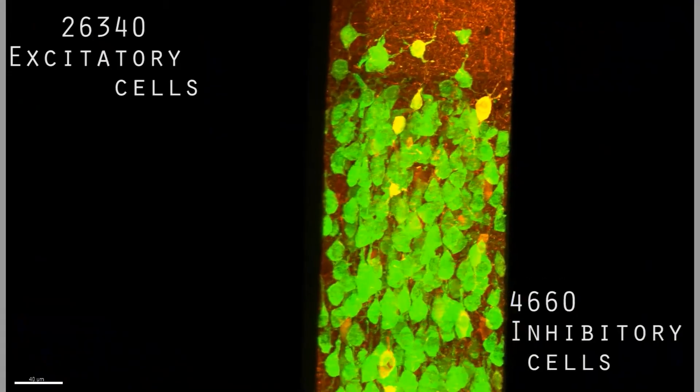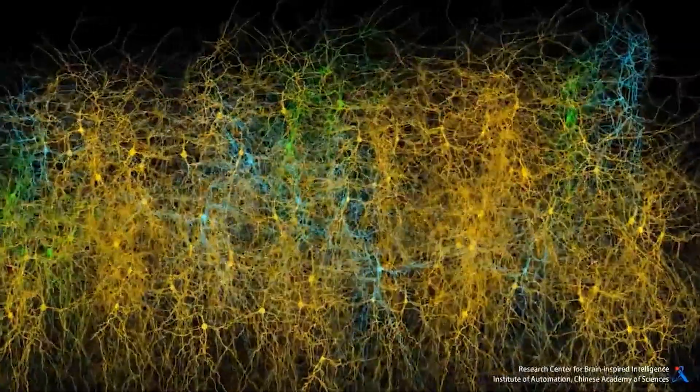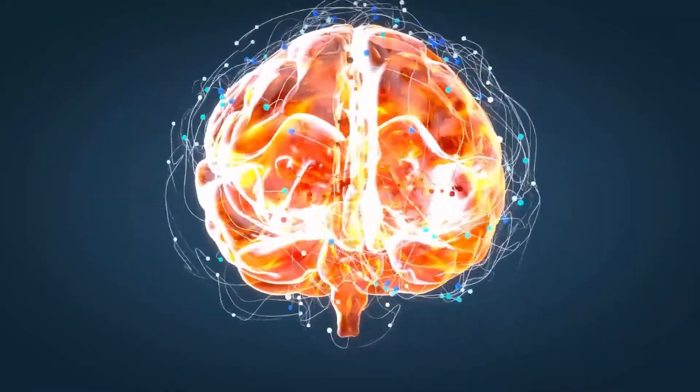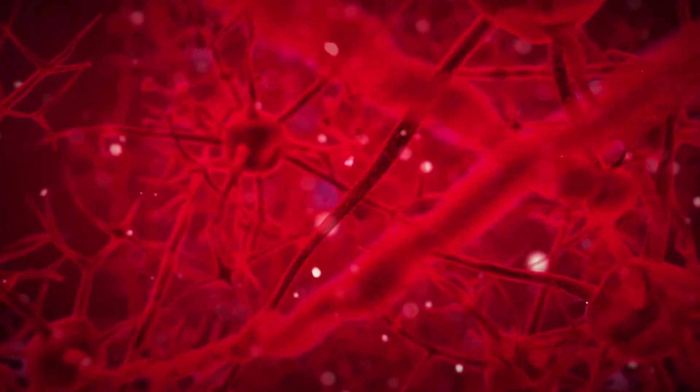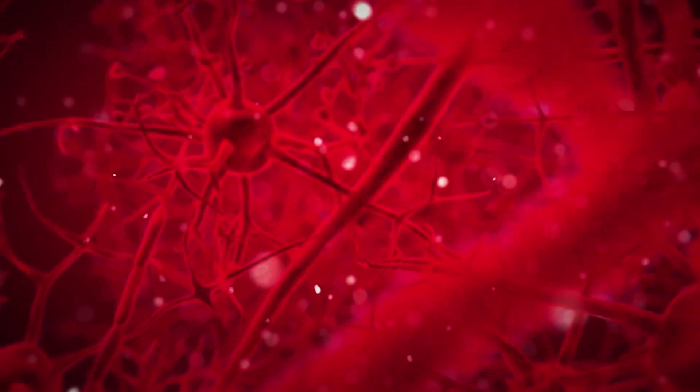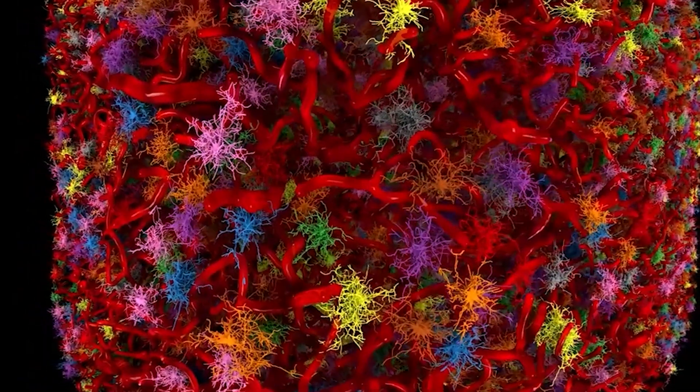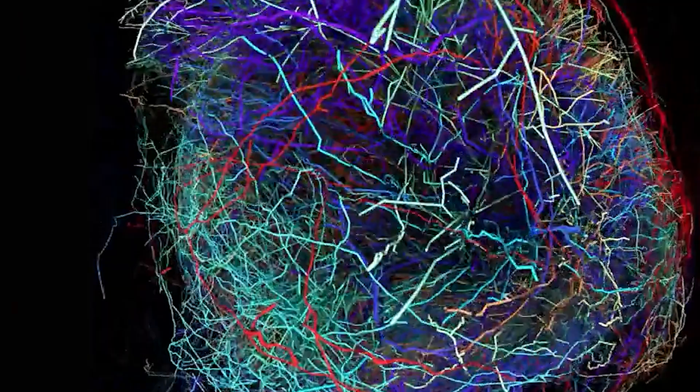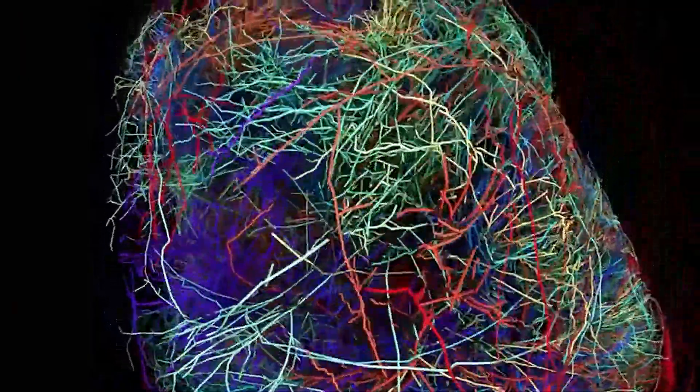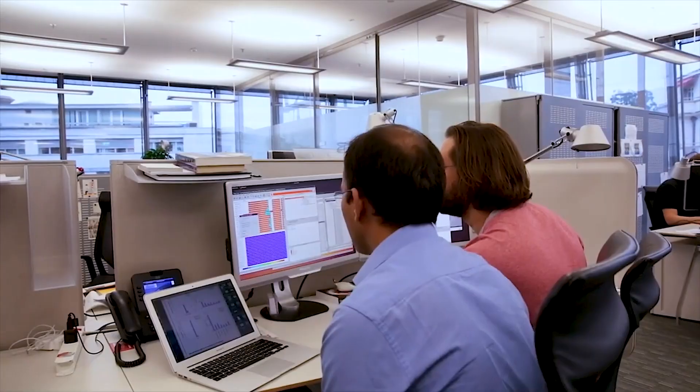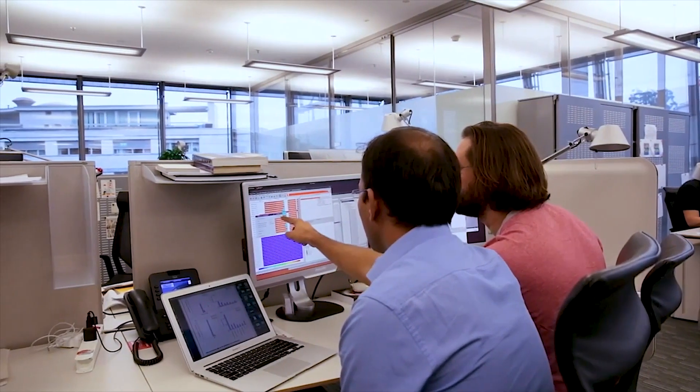Yet, despite these remarkable strides, critics of the Blue Brain Project argue that the initiative is overly ambitious and perhaps even impossible. They point to the brain's sheer complexity and the multitude of unknowns that still exist within neuroscience. Some neuroscientists argue that even if we could accurately map every neuron and synapse, simulating the mind's processes is a whole different challenge, one that might prove insurmountable.